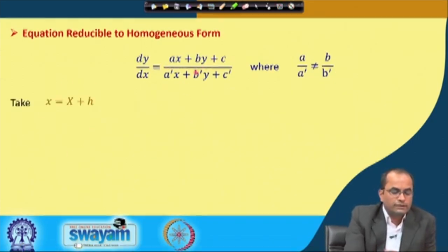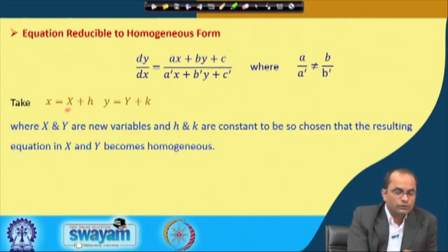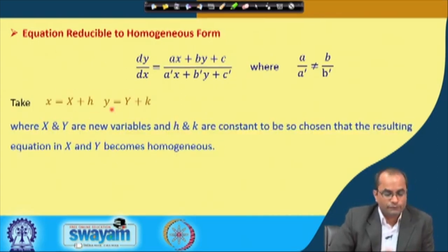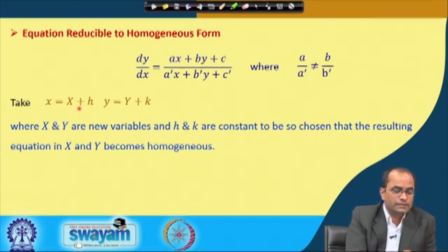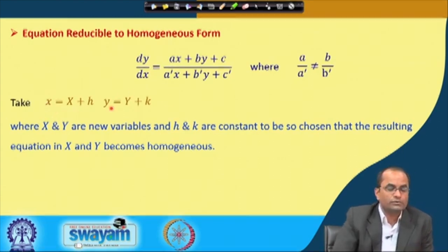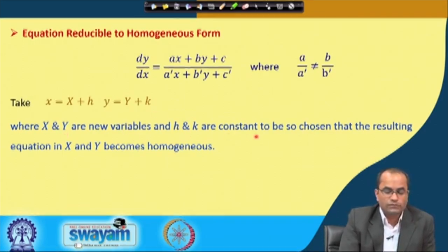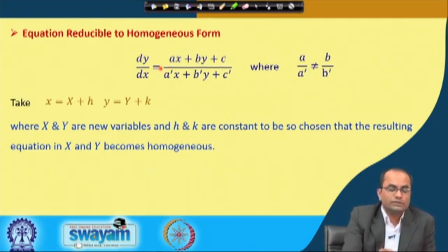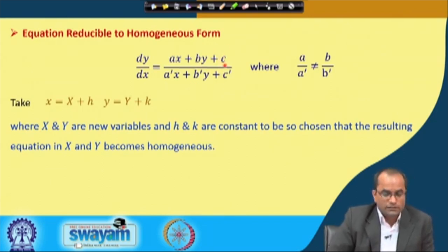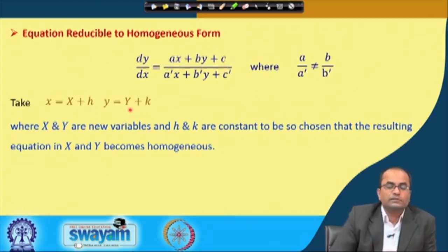What we do is take the substitution x = X + h and y = Y + k, introducing new variables X and Y, where h and k are constants to be chosen. We choose h and k so that this equation becomes homogeneous — because at present it is not homogeneous due to the constant terms c and c'.